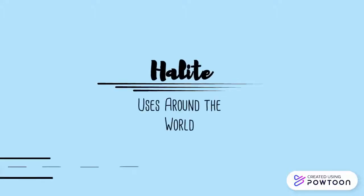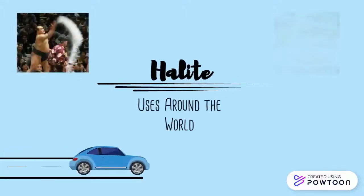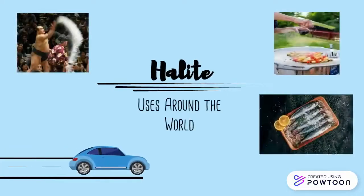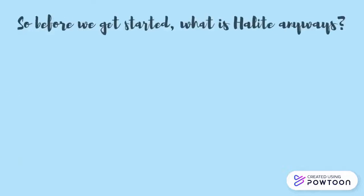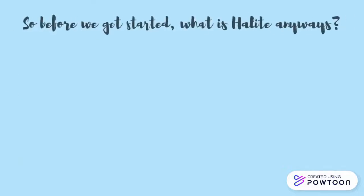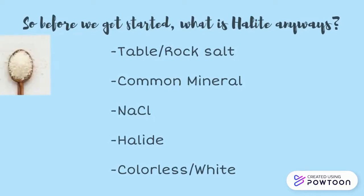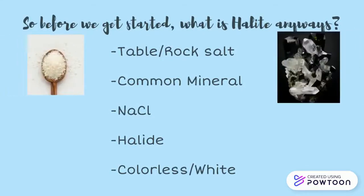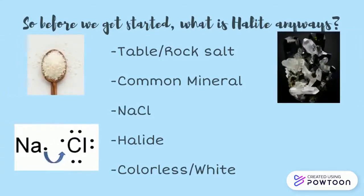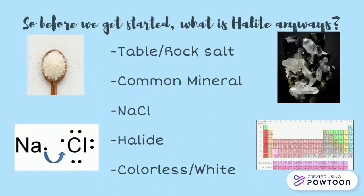Halite: uses around the world. So before we get started, what is halite anyways? In short, it's simply salt. Halite, also known as table or rock salt, is a common mineral. Its chemical formula is NaCl and is classified chemically as a halide. Without impurities, halite appears colorless or white.